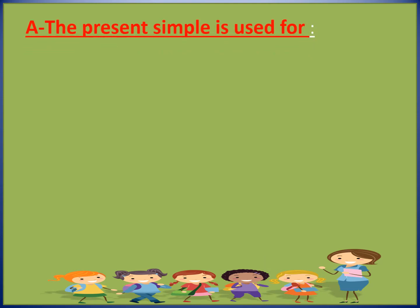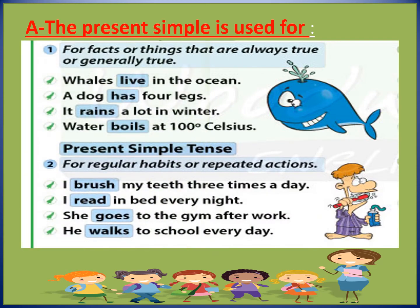The present simple is used for facts or things that are always true or generally true. For example, whales live in the ocean — it's a fact. All of you know that whales live in the ocean. A dog has four legs. You never saw a dog with two or three legs, right? So that's a fact and it's true.